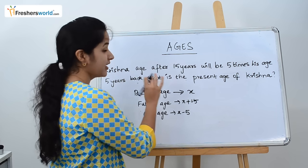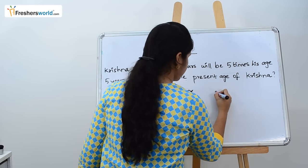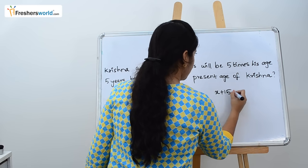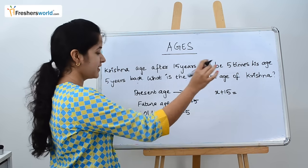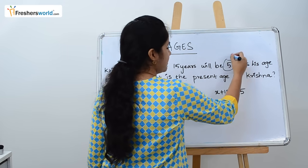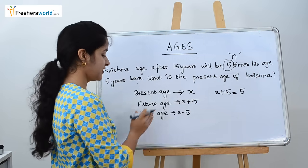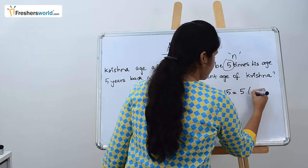Let's now create an equation. Read the question again. Krishna's age after 15 years, X plus 15, will be 5 times his age 5 years back. So 5 times is age 5 years back: X minus 5.